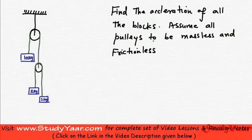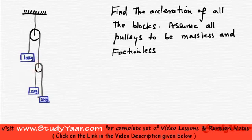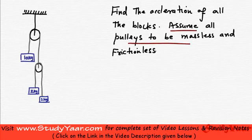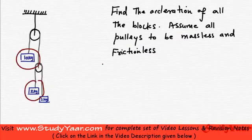Let's look at another example. We have a system of pulleys being loaded with a 10 kg weight, a 2 kg weight, and a 1 kg weight. We are also given to assume that all pulleys are massless and frictionless. We have to find out the acceleration of all the blocks.